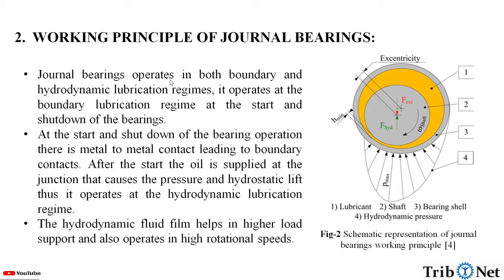What is the working principle of journal bearings? Journal bearings operate in both boundary and hydrodynamic lubrication regimes. They operate at the boundary lubrication regime at the start and shutdown of the bearings, where there is metal-to-metal contact leading to boundary contact. After the start, oil is supplied at the junction, causing pressure and hydrostatic lift, and thus it operates at the hydrodynamic lubrication regime. The hydrodynamic fluid film helps in higher load support and also operates at high rotational speeds. Here in the figure we can see the schematic representation of the journal bearings with the working principle.